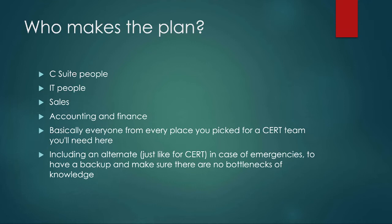We are going to have the C-suite people — the big decision makers — because we have to have somebody with the authority to say yes we can do this or no we can't. We want to have some IT people so they can look at different systems and technologies and know what we're capable of. We also want sales, accounting, and finance people because they know their departments and the software they need best. All of those pieces of the company have to be part of our disaster response plan.